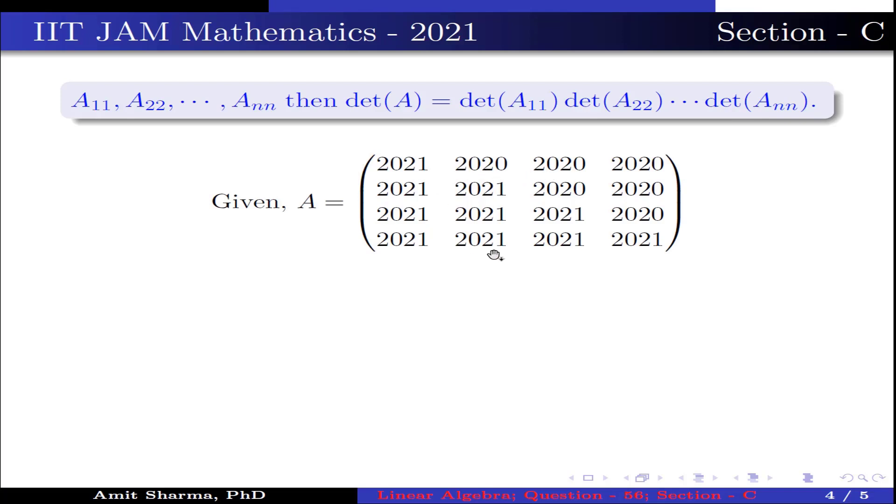Now given 4 by 4 matrix having these elements, applying the elementary operation on row 2, row 3 and row 4 as R2 minus R1, R3 minus R1, R4 minus R1, we get